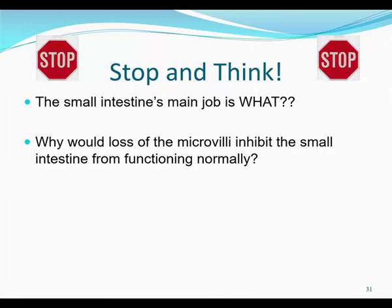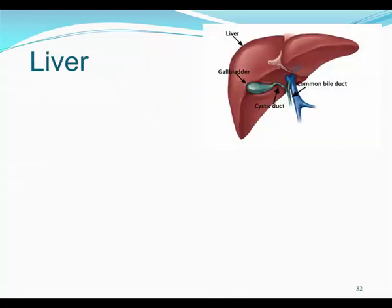The main job of the small intestine is to absorb nutrients. Loss of microvilli would inhibit this because of the giant decrease in surface area, and the microbes would then have a party with all those nutrients once they got to the large intestine, causing gas, pain, and bloating. Remember, an accessory organ is an organ involved in digestion, but food doesn't pass directly through it.